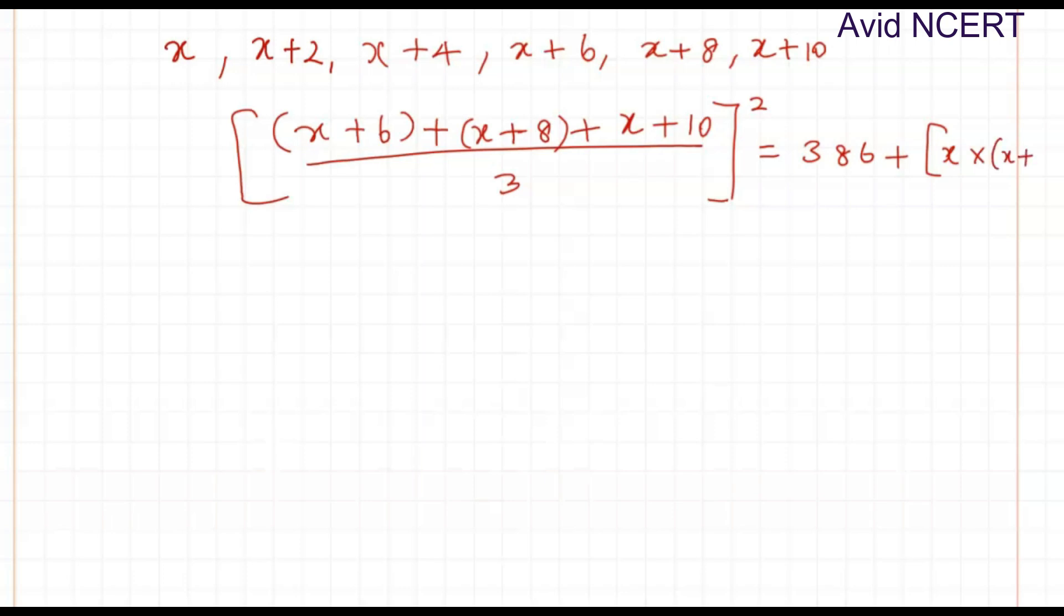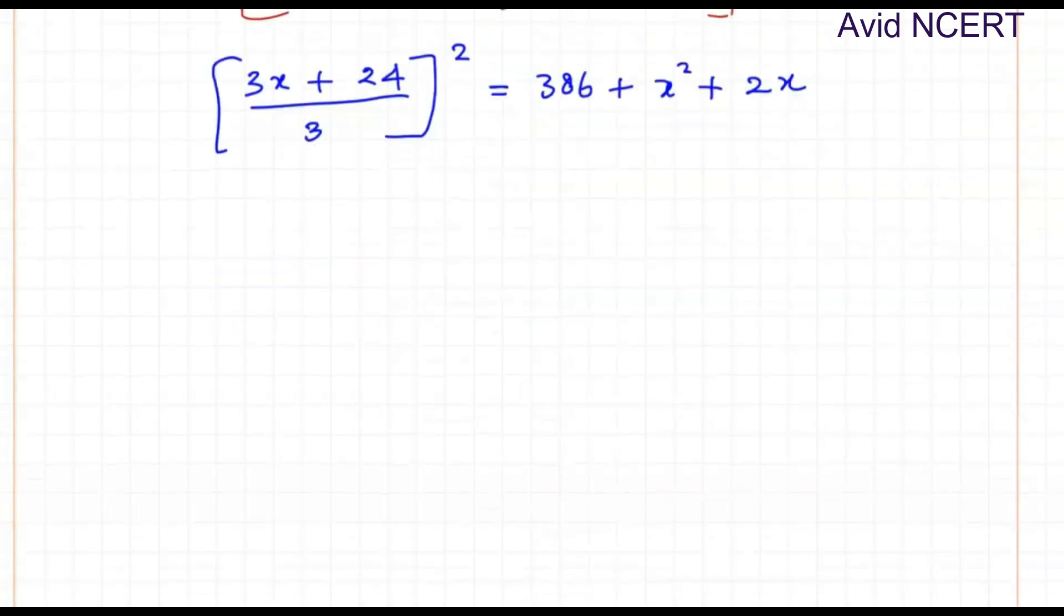So which equals 3x plus 6 plus 8 plus 10, which equals 24, divided by 3. The whole square equals 386 plus x into x is x square, plus x into 2 is 2x. So again here it is 3 times 8 is 24.